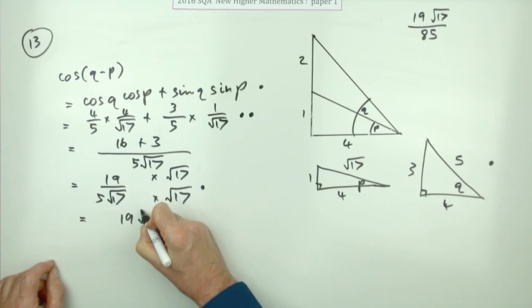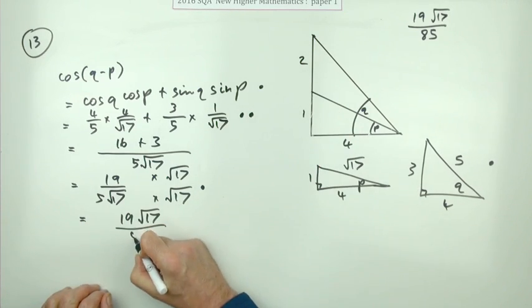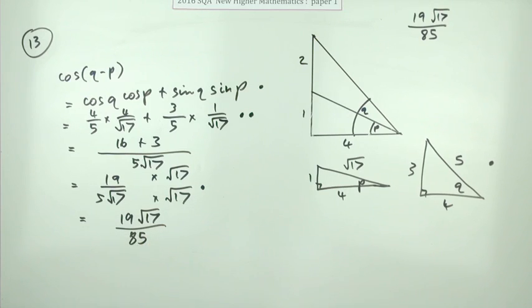Because after all, after that you just end up with this: 19√17 over 5 times 17, which you can just copy down as 85. Although of course it is 85. And if you want you can always put 'as required'—won't get any marks for that. That was a nice easy little five-marker then.